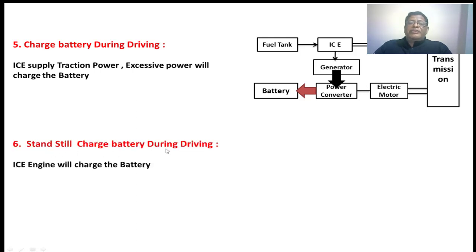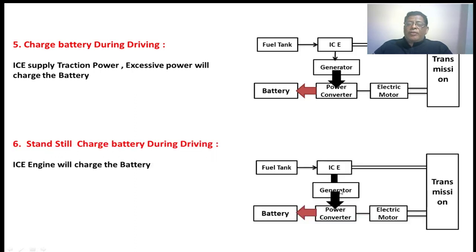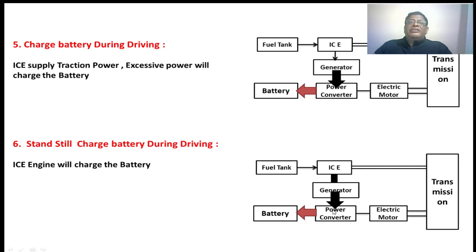Charging the battery during standstill: when the vehicle stops, the IC engine will be giving mechanical input to the generator. The generator will be converting the mechanical power to AC power, given to the rectifier circuit. This rectifier circuit will be converting the AC power to DC power, which will be charging the battery.